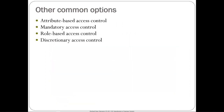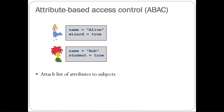Now let's talk about some common options for building access control systems. These aren't mutually exclusive — they are different ways of designing your access control system. The four things I'll cover are: attribute-based access control, mandatory access control, role-based access control, and discretionary access control.